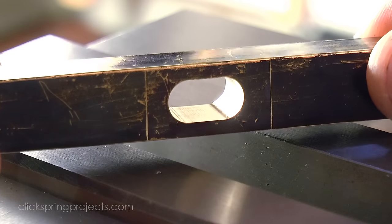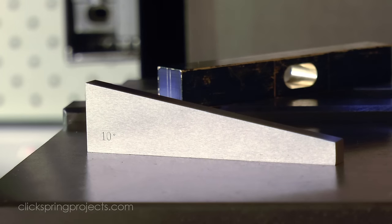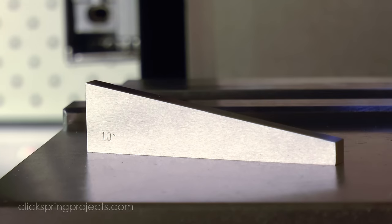The rest of the stock removal is fairly straight forward, and a sine bar would certainly be a good way to set up for the angled cut. But a fast and reasonably accurate alternative is to use an angle block.